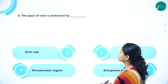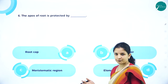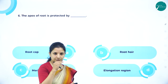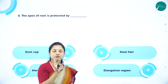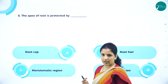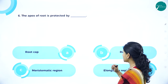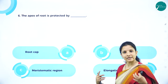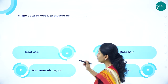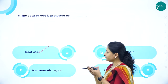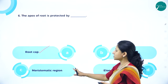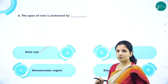Next MCQ: The apex of the root is protected by — root cap, root hair, meristematic region, or elongation region? Root hair is present towards the region of the stem, not at the tip. Meristematic region is above the root cap. In the elongation region, cells increase in length. It is the root cap that is present below the meristematic region, covering and protecting it. So the apex of the root is protected by the root cap.